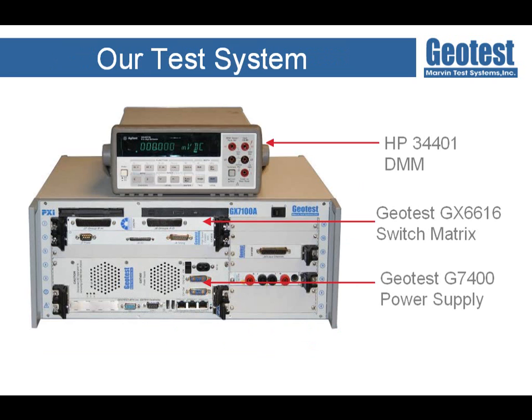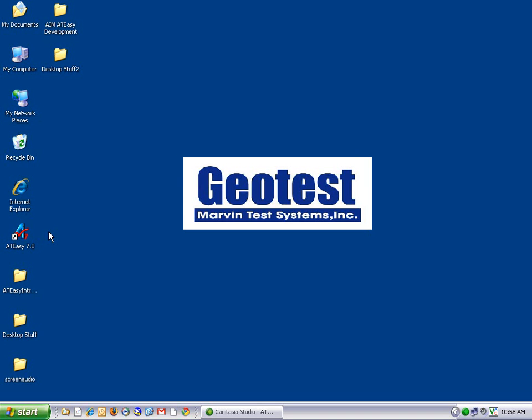Now that I've introduced ATEasy, we will move on to actually developing a simple test program that controls a power supply, matrix switch card, and GPIB-DMM to take voltage readings. The first thing I'm going to do is double-click the ATEasy 7.0 shortcut on the desktop to start ATEasy.